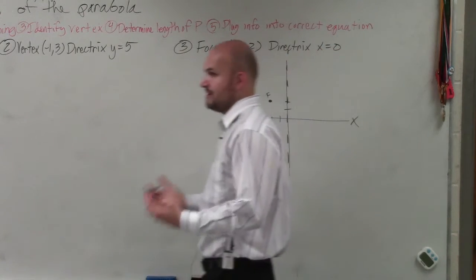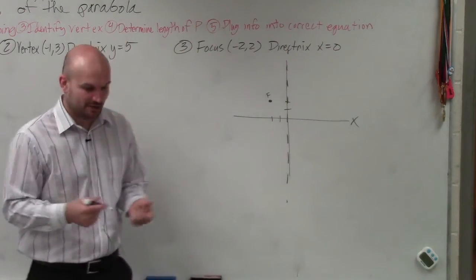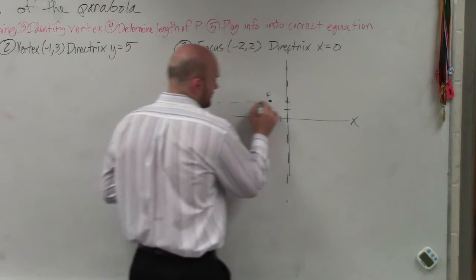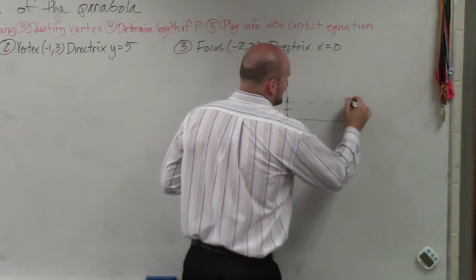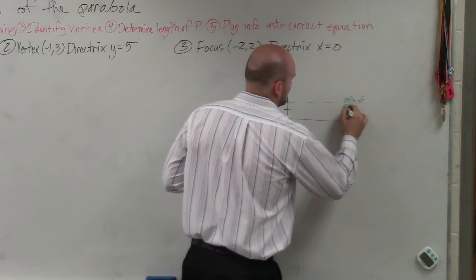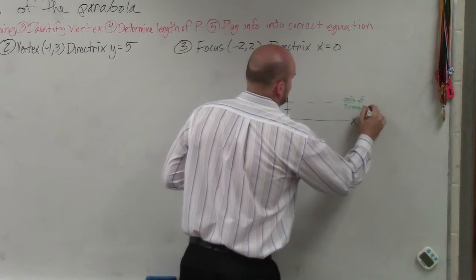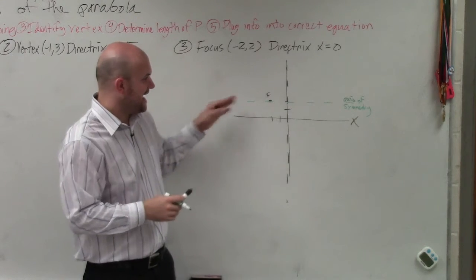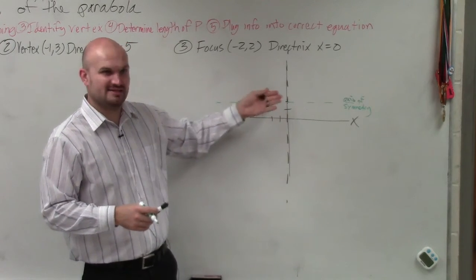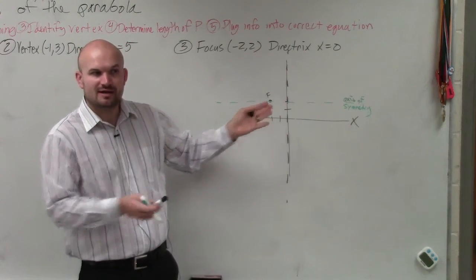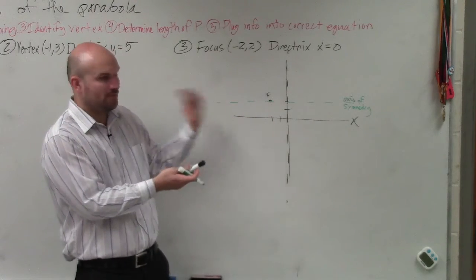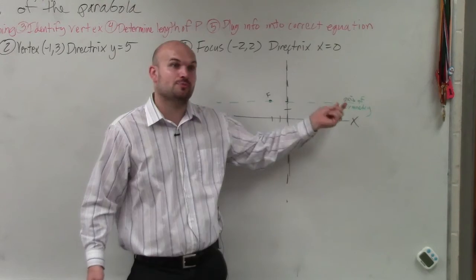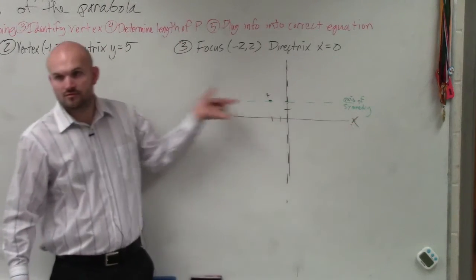Now, remember, the directrix is perpendicular to the axis of symmetry. I didn't tell you to draw the axis of symmetry, but sometimes it's helpful. So that's my axis of symmetry. Here's my directrix. I know my parabola can't go up, because then it wouldn't be going through the axis of symmetry, right? Axis of symmetry cuts in half, so it has to open right or left. Well, the graph doesn't open up towards the directrix. It always opens up towards the focus.